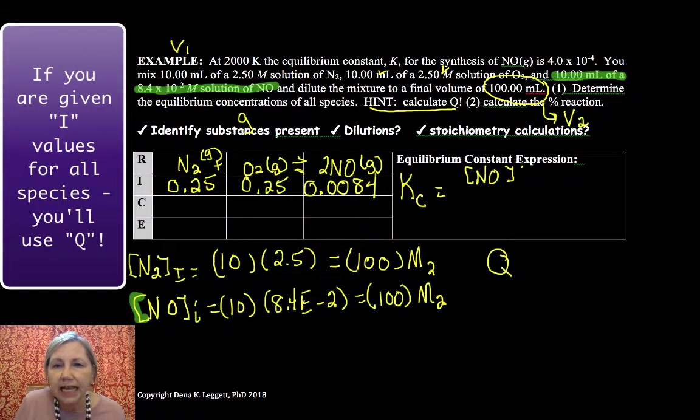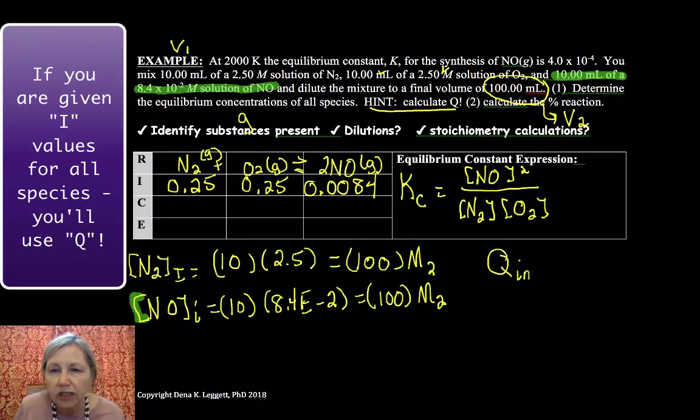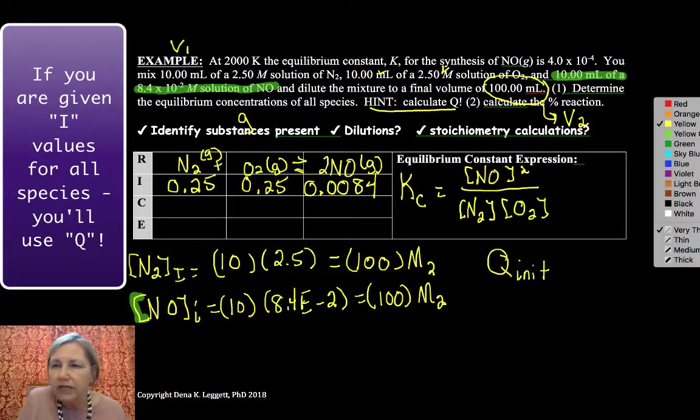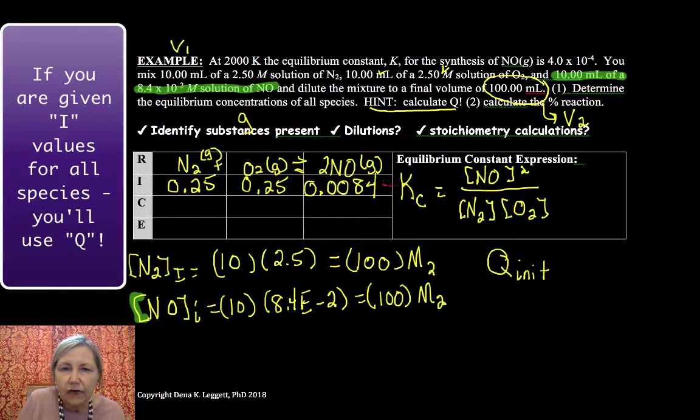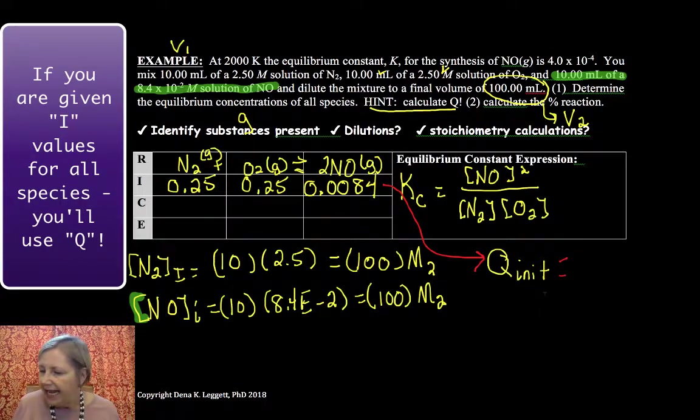I'm going to set up my K expression. Q is solved the same way. The only difference is that Q is always done with initial values. So I'm always funneling in from my I row to get to Q. And if you plug that into Q using those initial values, I got 0.00113. And you know what, I'm going to tell you to plug those values in and check our math.